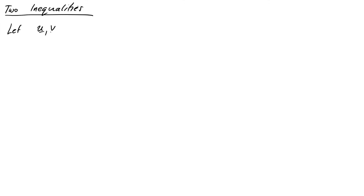We're going to finish this video with a couple of important inequalities. Mathematicians love creating inequalities because often we're trying to estimate something like how much error we might be making in an approximation. We end up with nasty expressions that we can't do very much with, but if we can replace them by something simpler that's not too much bigger, that will often suffice. So the first fundamental inequality is called the Cauchy-Schwarz inequality, and it says that the absolute value of the dot product of u and v is less than or equal to the product of the lengths of the vectors.